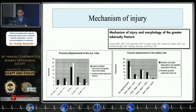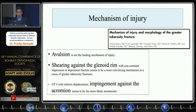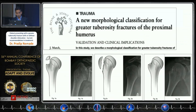With or without dislocation, the displacement patterns are almost the same whether the greater tuberosity fracture is associated with dislocation or not. One widely cited article states that avulsion is not the leading cause of injury; most of the time it is the shearing of the glenoid rim. The authors also identified one particular fracture pattern with impaired displacement occurring because of impingement against the acromion.